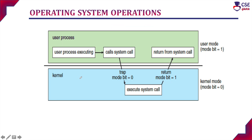This picture explains how user mode and kernel mode processes execute. Initially, once the system boots, it will be in kernel mode. Then the user process will be assigned for execution — most of the time the user process will be executing with the CPU. When the user process gets a system call, an interrupt will be raised — either a hardware interrupt or a software interrupt. Through any interrupt process, the interrupt will be raised. That is called a system call.